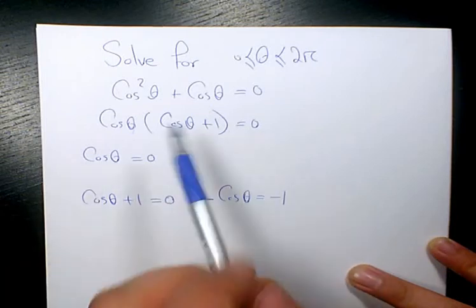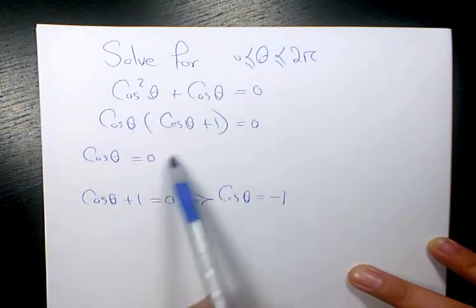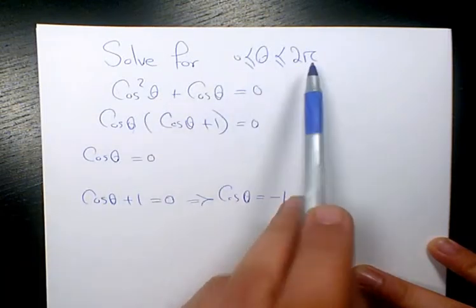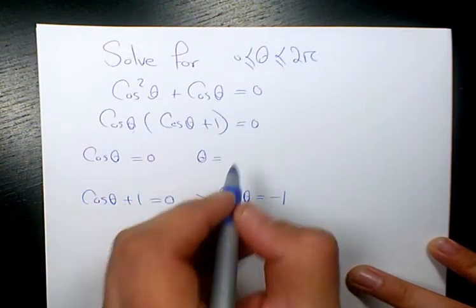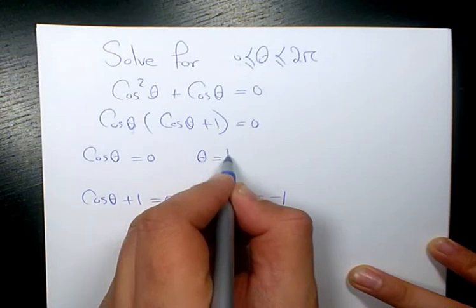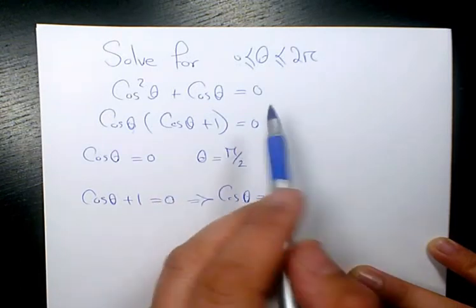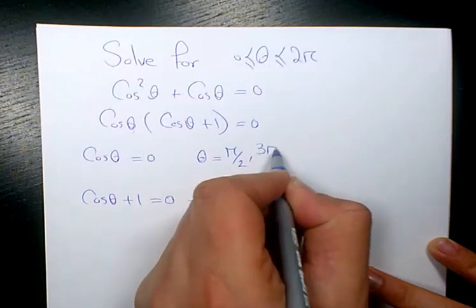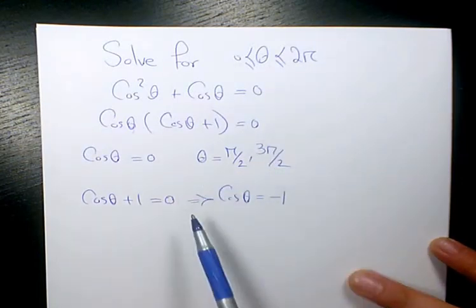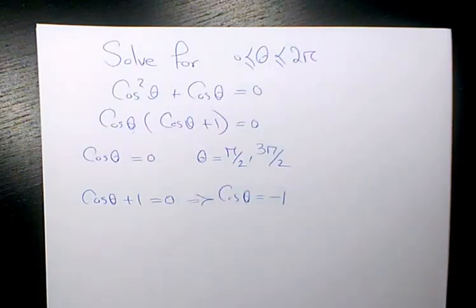Cosine theta equals 0. We know when cosine theta is 0 and theta is between 0 and 2π, we have π/2 from 0 to π, and from π to 2π we have 3π/2. So for these two theta values, π/2 and 3π/2, cosine theta is going to be 0.